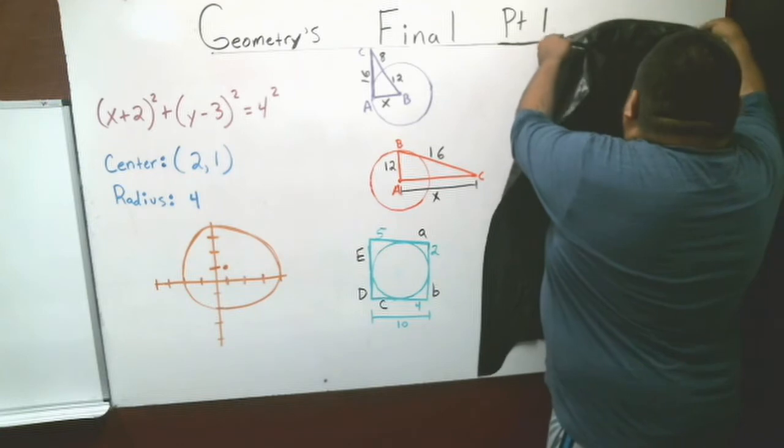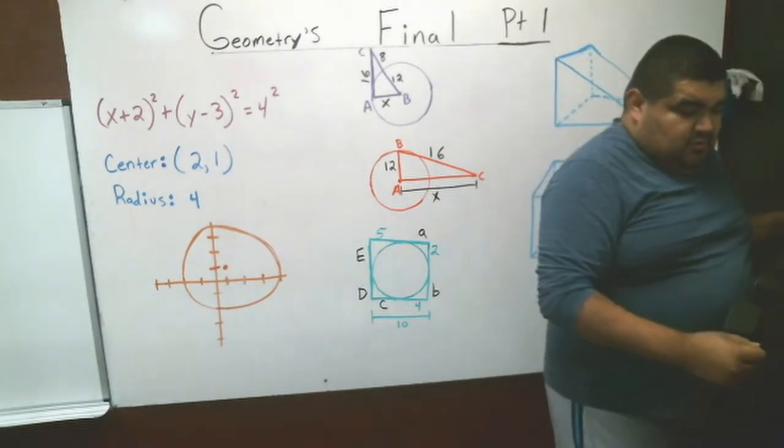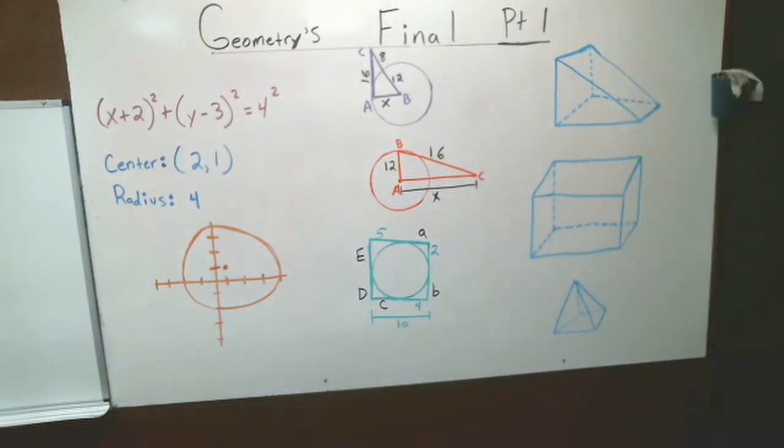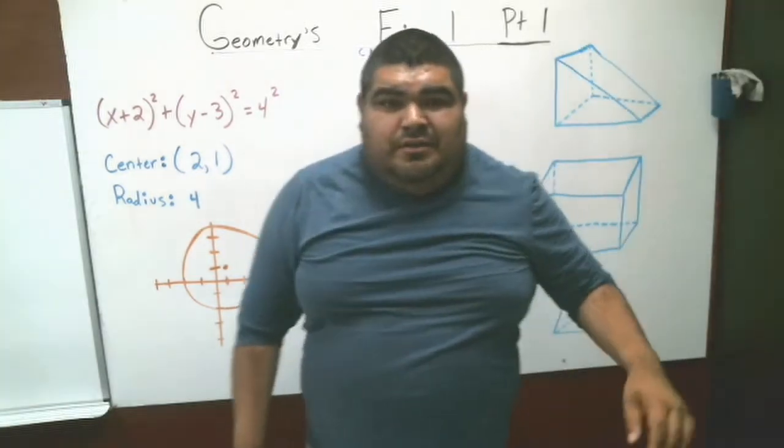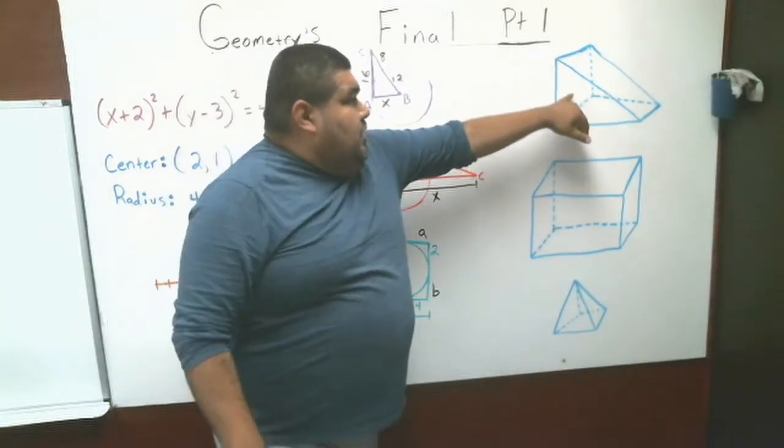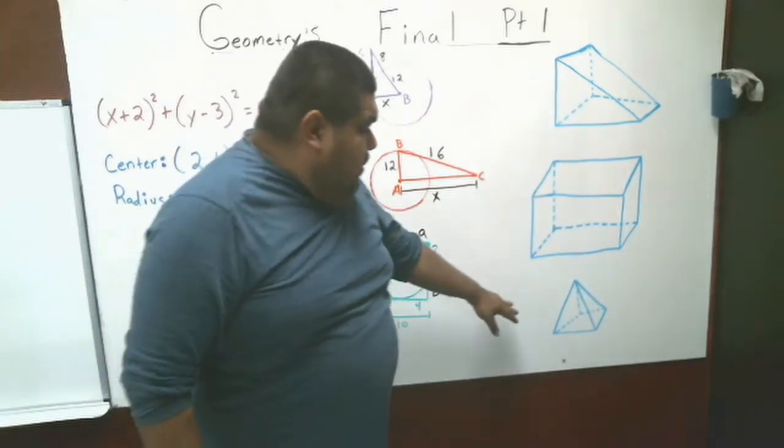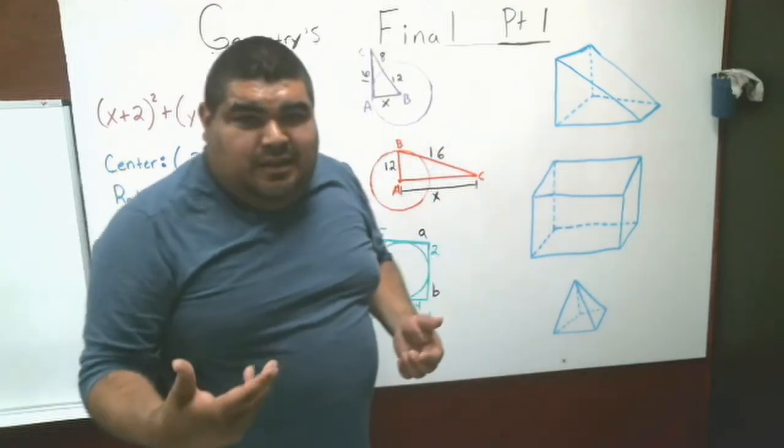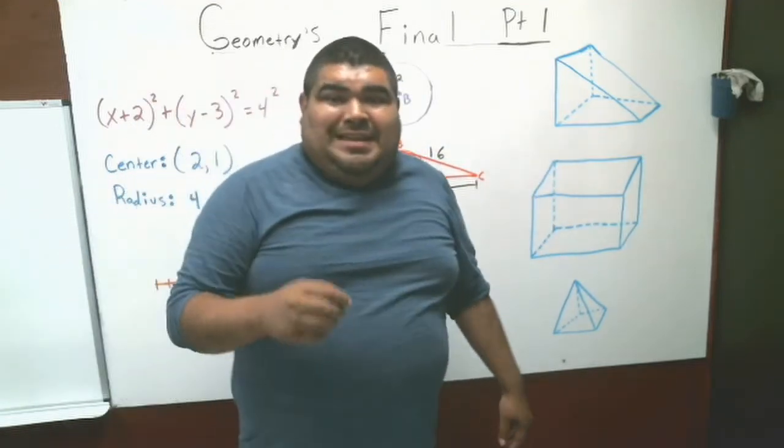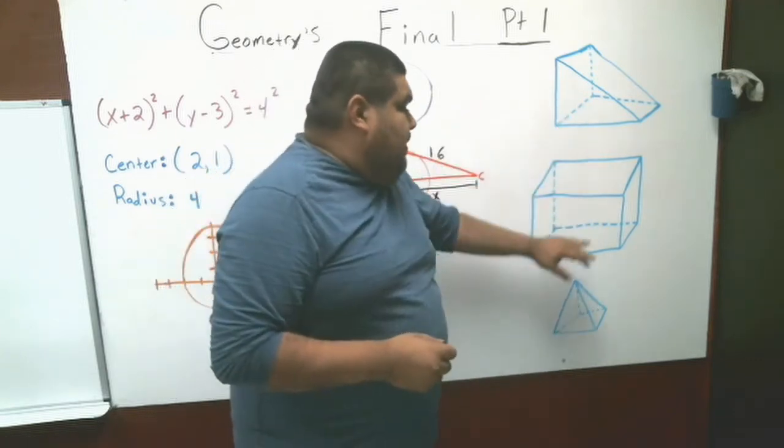And then finally, for the final part of the final. All you are doing is, on these three shapes, you have a rectangular prism, a triangular prism, and then this kind of like a slide. You have to tell me how many edges, vertices, and faces does each one of these ones have.